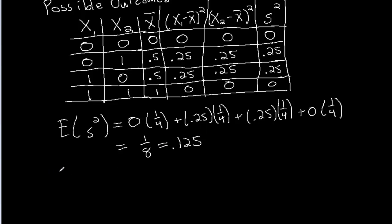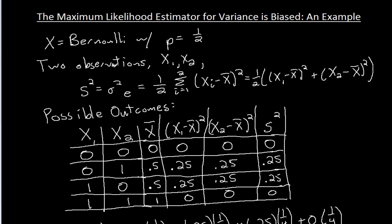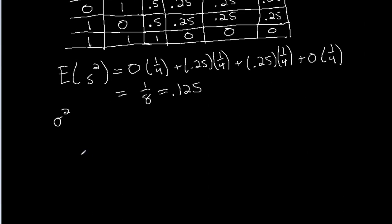However, sigma squared, that's what we're trying to estimate here, we know what that is. We are dealing with a Bernoulli random variable, and we showed in a previous video, as well as in the text, that sigma squared for a Bernoulli random variable is p times one minus p. So that's 0.5 times one minus 0.5, that's 0.25. The variance is 0.25.